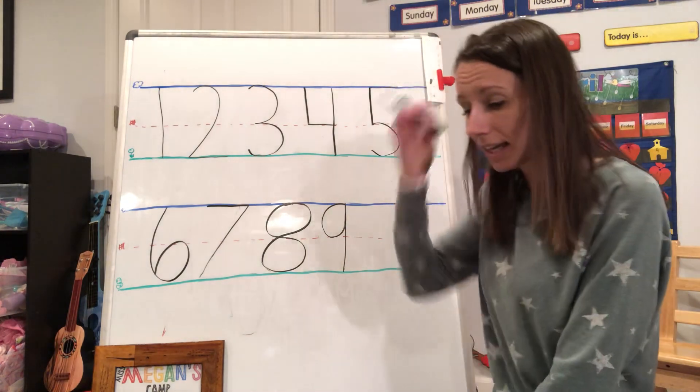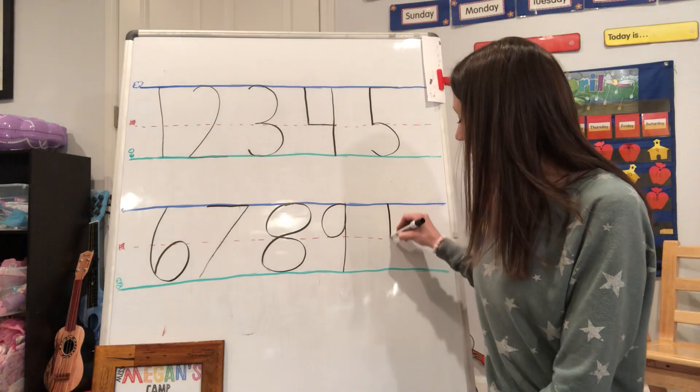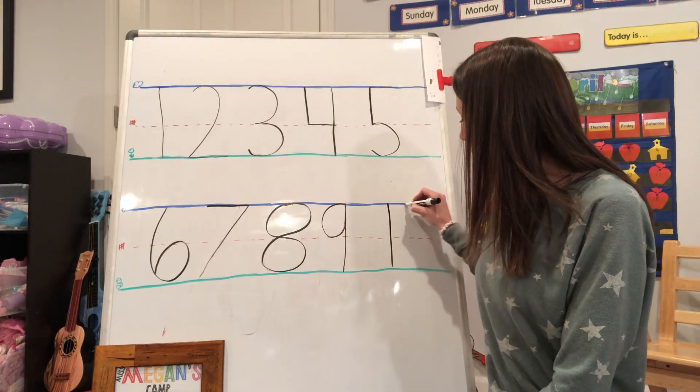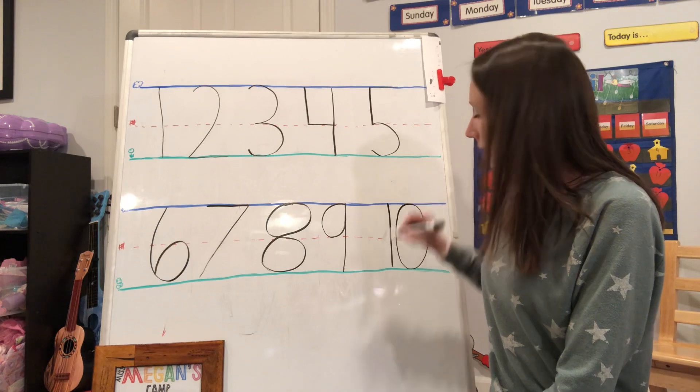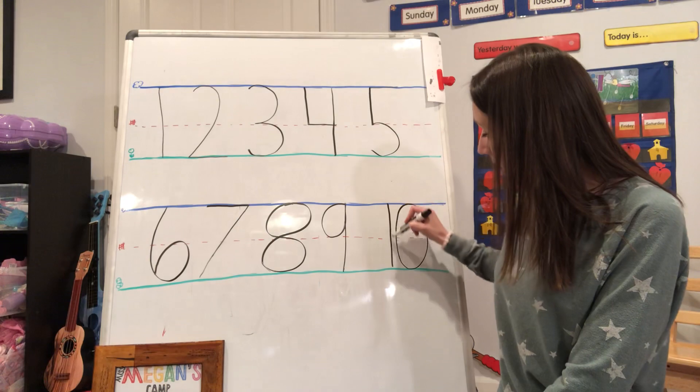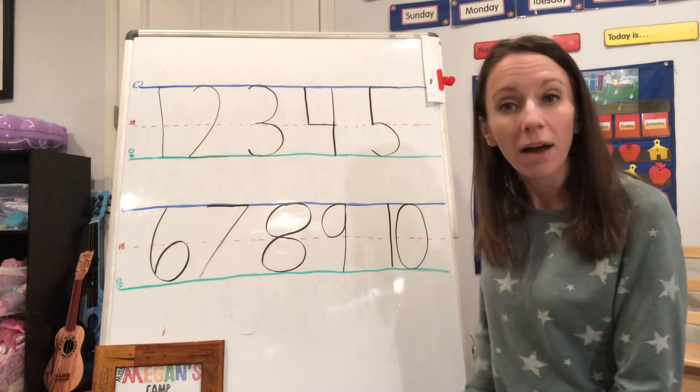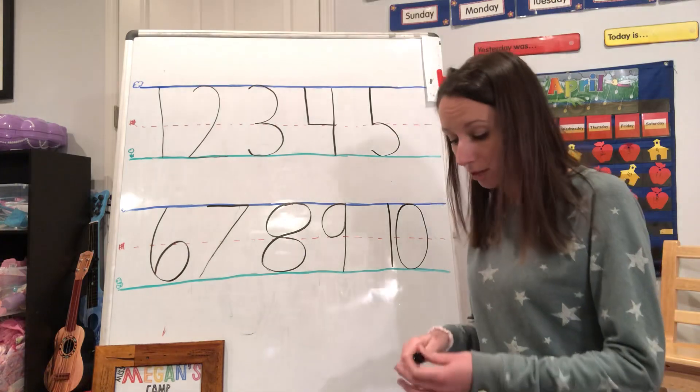And finally, a ten. We say, a one and an O, that makes a ten, you know?